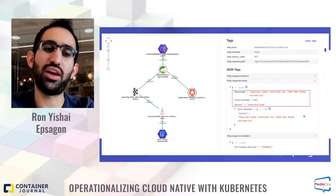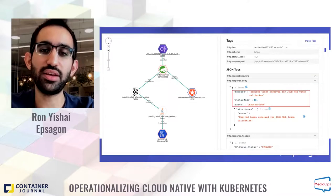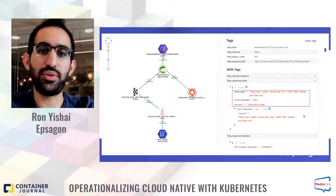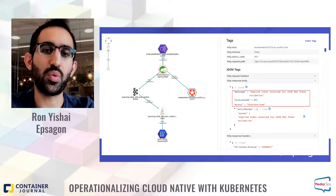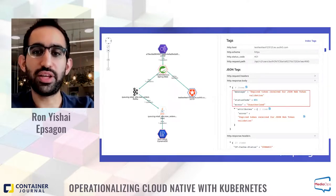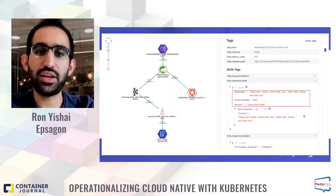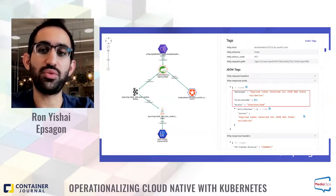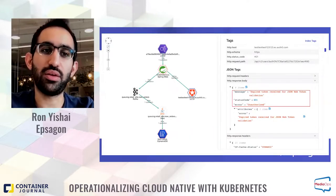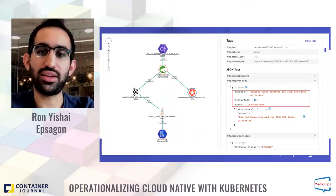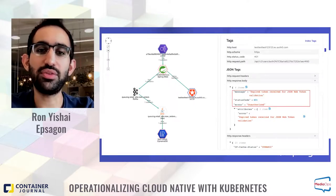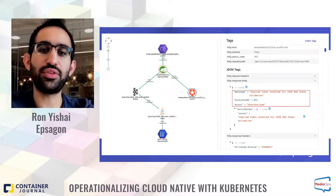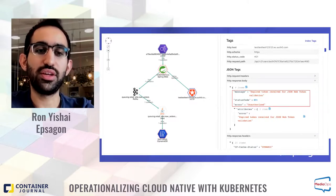This example shows how efficient distributed tracing can be, especially when it comes to root cause analysis — because the root cause of the issue is the invalid handling of the authentication problem, not the invalid API call we found through metrics and logs. This is a good example of how distributed tracing can really help you monitor your applications when you use microservices. We can also see that monitoring third-party APIs like Auth0 can be very important, and tracing can easily be used to generate application performance metrics, giving you a reliable picture of service performance.